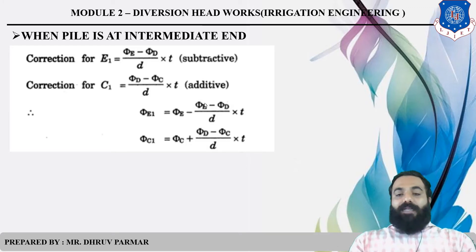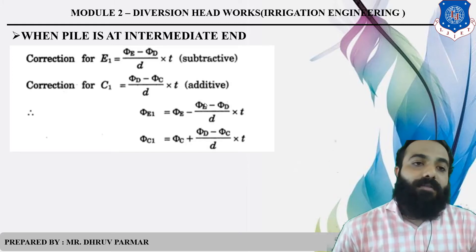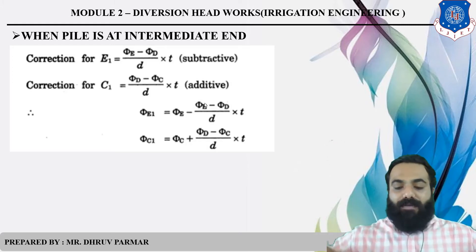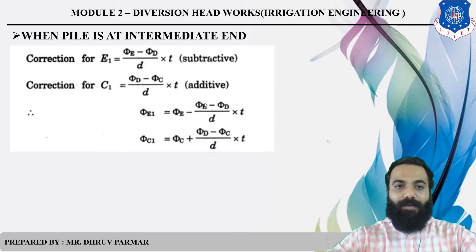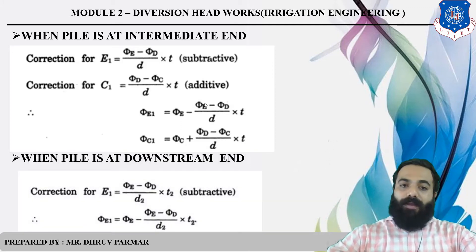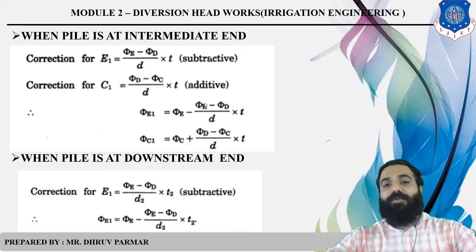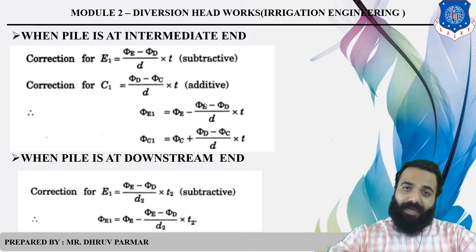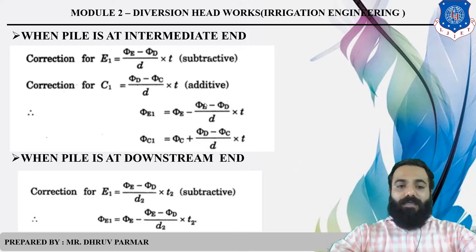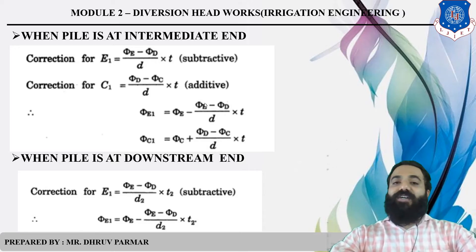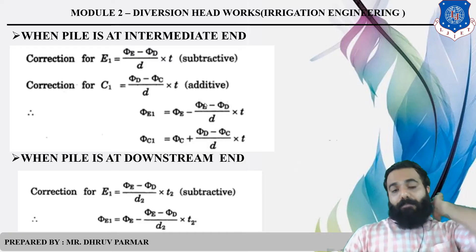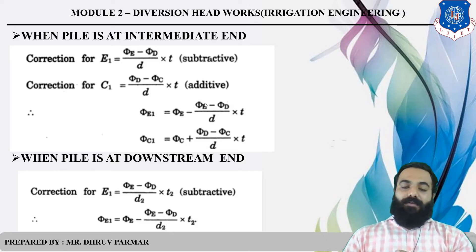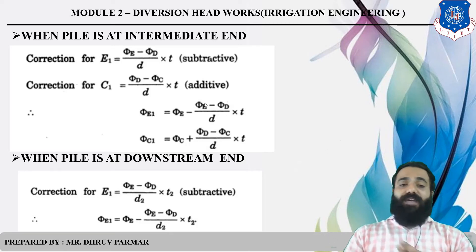In your exam, most cases give upstream pile and downstream pile; intermediate pile examples are rarely asked. For the downstream end, the flow goes from E to D, so the correction equals (phi_E minus phi_D) divided by D multiplied by T. The pressure at E1 equals phi_E minus the correction. For upstream, the correction is positive; for downstream, the correction is negative. Please remember this — it is very important.